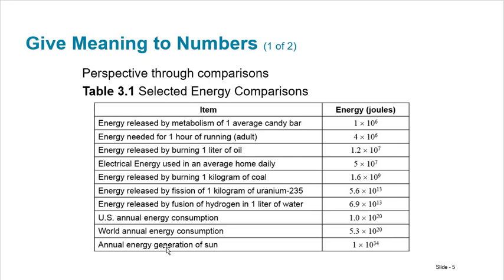Annual energy generation of the sun, 10^34 versus 10^6. That's a whole lot more energy. So these magnitudes give us meaning by seeing power. That's why scientific notation is good because we can see really quickly how much bigger something is than something else.